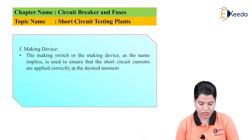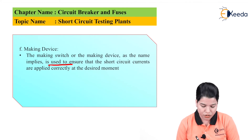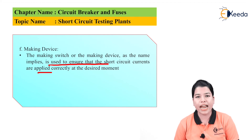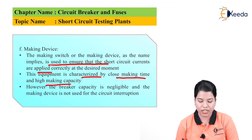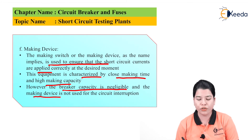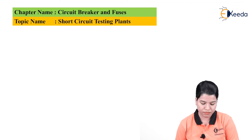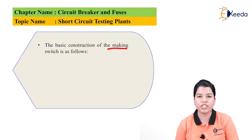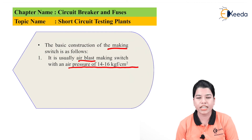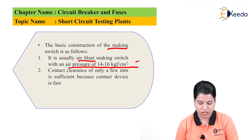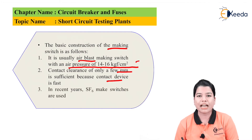The making device or making switch ensures that short circuit currents are applied correctly at the desired moment. It is characterized by close making time and high making capacity; however, its breaking capacity is negligible and it is not used for circuit interruption. It is basically an air-blast making switch with air pressure of 15 to 16 kgf per cm². A contact clearance of a few mm is sufficient as it is very fast. In recent years, SF6 type make switches are also used.